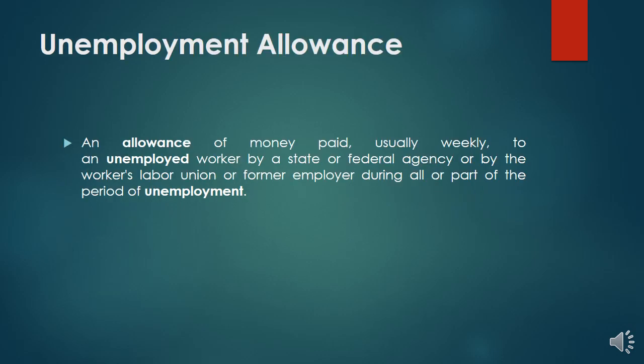Unemployment allowance is a payment of money, usually weekly, made to an unemployed worker by a state or federal government, by the worker's labor union, or by a former employer during all or part of the period of unemployment. This is a relatively new concept for developing countries, as no allowances are allocated for unemployed people there. In advanced countries, if a person is unemployed, the government pays an unemployment allowance on a weekly basis to meet their expenses.